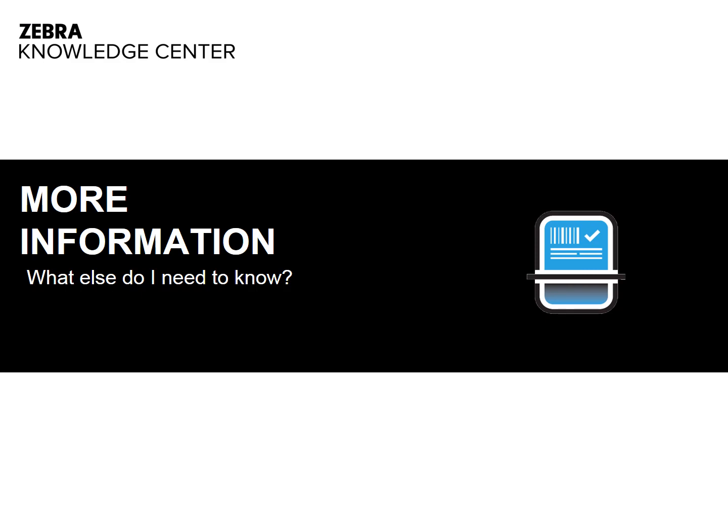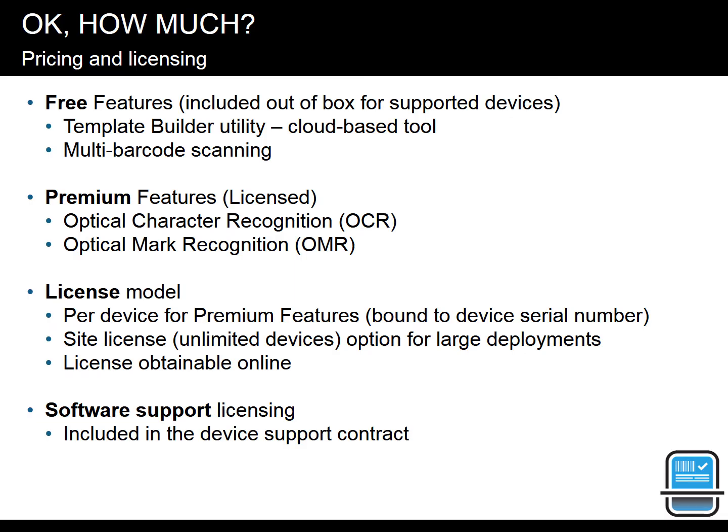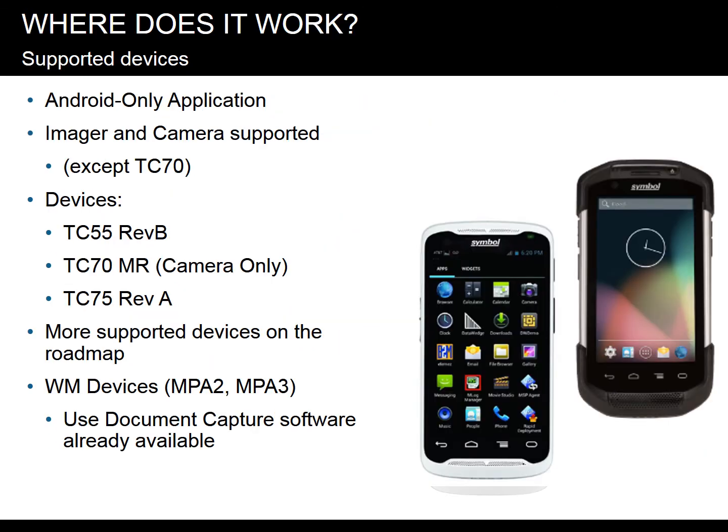SimulScan follows a freemium licensing model. Some value-added features are available free of charge, while premium features require a license. The cloud-based template builder and multi-barcode features can be used free of charge. OCR and OMR processing are premium features requiring a perpetual device license. The license is assigned to the individual serial number of each device, and enterprise licenses can be assigned for deployments exceeding a certain number of devices. SimulScan is currently for Android-only applications and can use either the imager or the device's camera. Supported Zebra devices are listed in the resources.